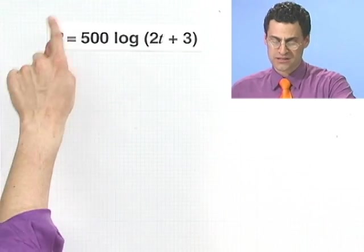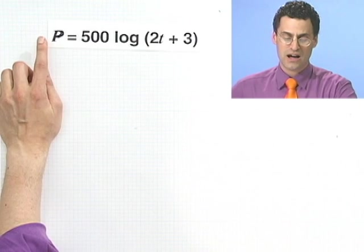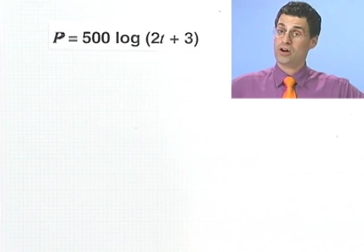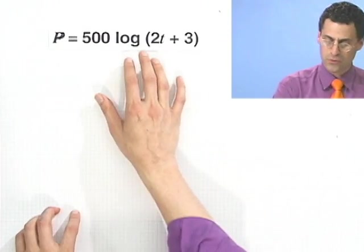Right now, the way this formula works is, if you give me time, how many months, I can tell you what the population is. I want to now solve it for t. So if I tell you what the population is, I want to know how long I'll have to wait until I have that population. So how do I solve this for t?